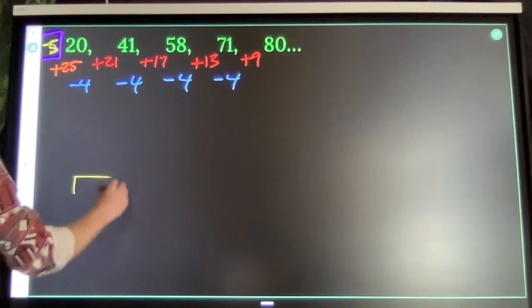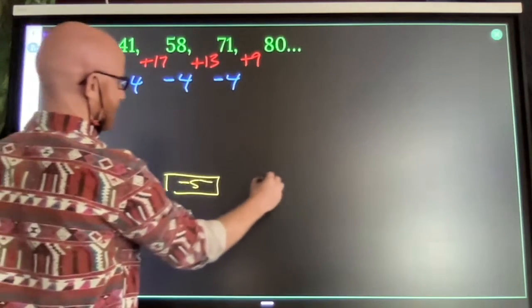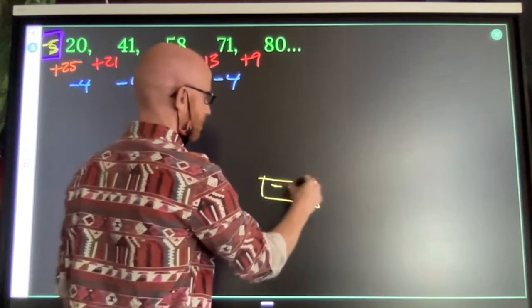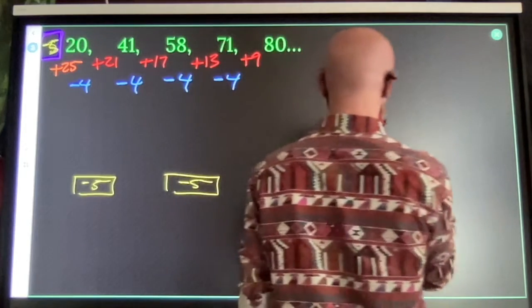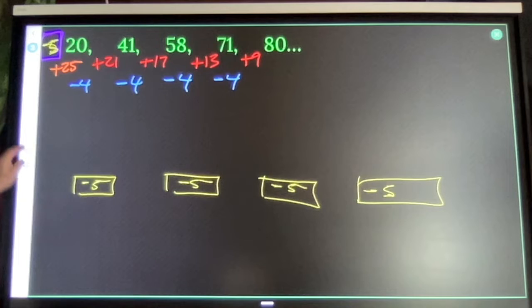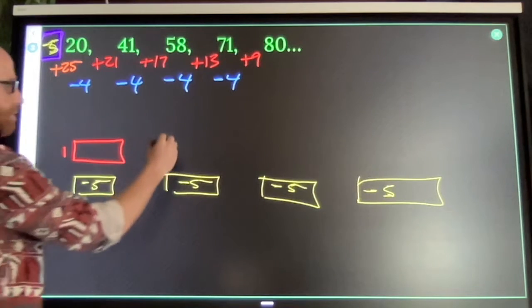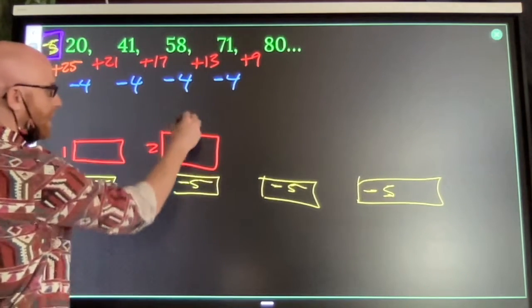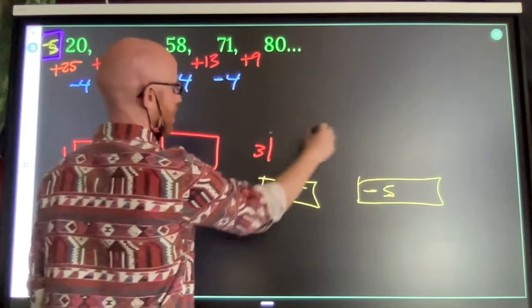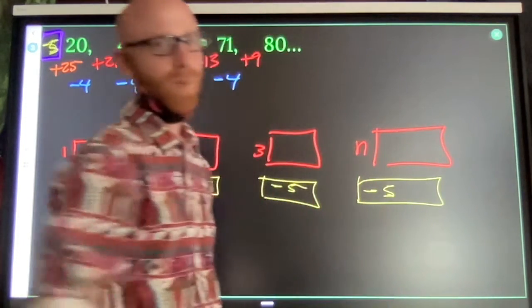So, I've got negative 5 pieces every time. I'm going to put my rectangles above here. My first rectangle should be 1 by something. My second rectangle should be 2 by something. My third rectangle should be 3 by something. And I want a general rectangle, n by something.